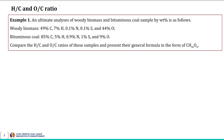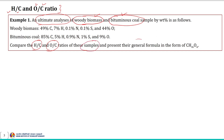Let us begin with the first example. This example is based on the concept of H/C ratio and O/C ratio, which we discussed while covering solid fuel and its characteristics — specifically the ultimate analysis of solid fuel and why it is essential. We will use this concept to compare H/C and O/C ratios of two fuel samples and represent their general formula in the form of CHO.